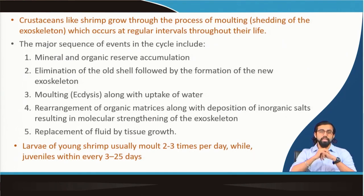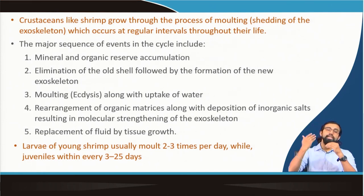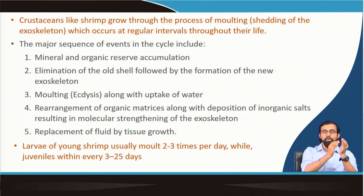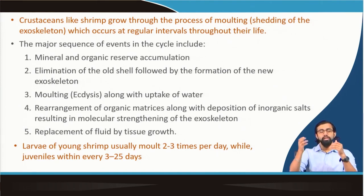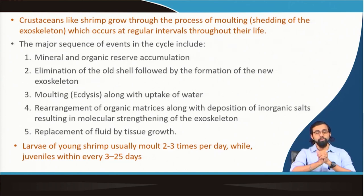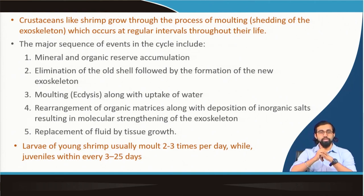Crustaceans like shrimp grow through a process called molting — the shedding of the exoskeleton. They shed the exoskeleton at regular intervals throughout their life. Young shrimp molt 2 to 3 times a day, while at the juvenile stage the frequency becomes once every 3 to 25 days. Through molting they keep growing until their maturation stage.